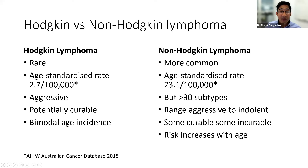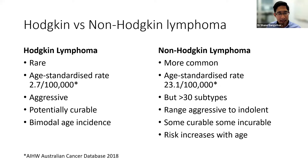Non-Hodgkin lymphoma is much more common — up to 23 in 100,000 people. There are over 30 subtypes within that group. Some are aggressive like Hodgkin's, but some are indolent — very slow growing, sometimes not even needing treatment, or coming back very slowly. Some are curable, but some are incurable and people live with them. Unlike Hodgkin's, which peaks in young adulthood, the risk of non-Hodgkin's generally increases with age.